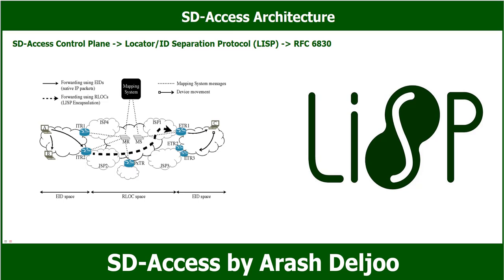In Cisco SD Access, several enhancements to the original LISP specification have been added, including distributed anycast gateway, virtual network extranet, and fabric wireless. Step by step, we will learn about the detail of SD Access. Now we know about the SD Access control plane and that LISP provides the control plane of SDA.